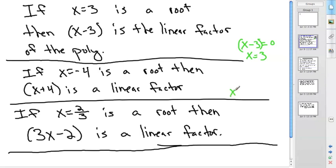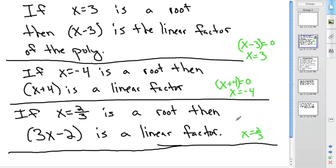If x equals negative 4, add 4 to both sides to get x plus 4 equals 0 — that's the linear factor. With the fraction x equals two-thirds, multiply both sides by 3 to get 3x equals 2, then subtract 2 to get 3x minus 2 equals 0. That's your linear factor.